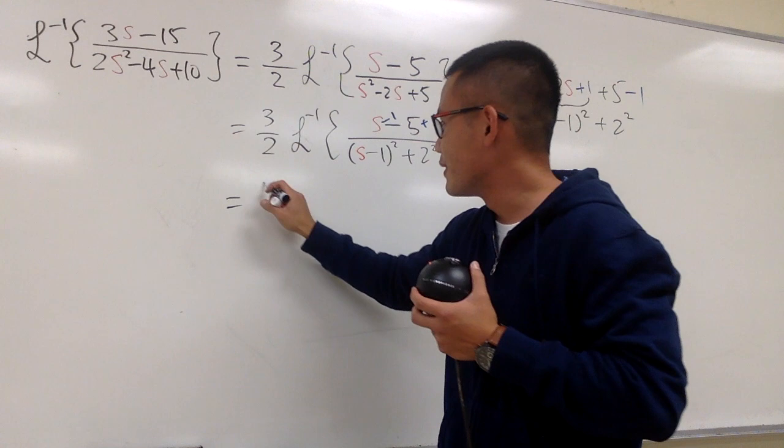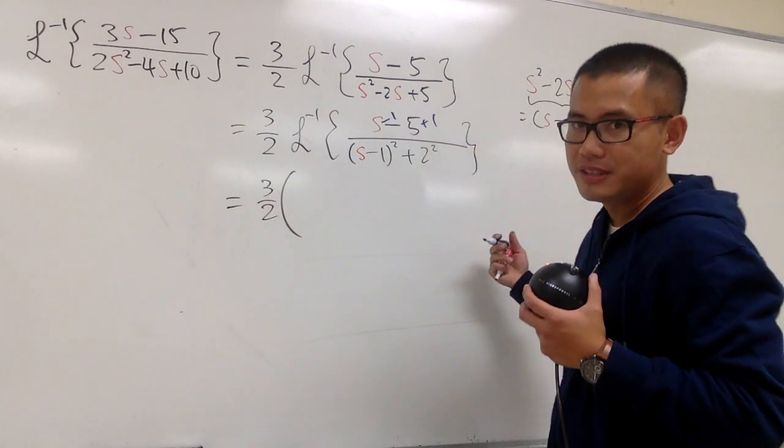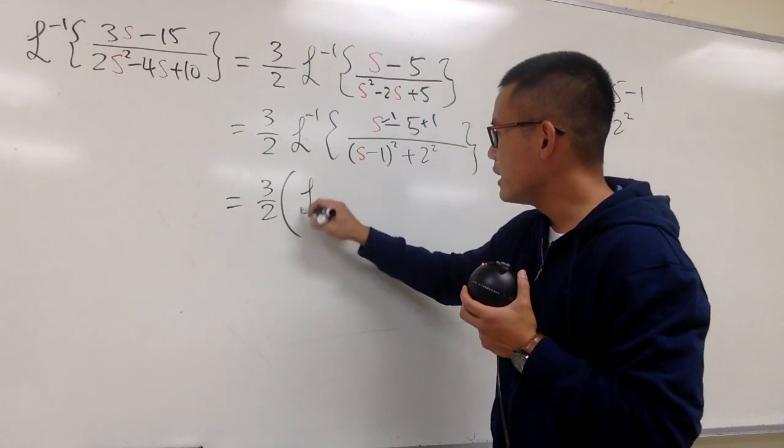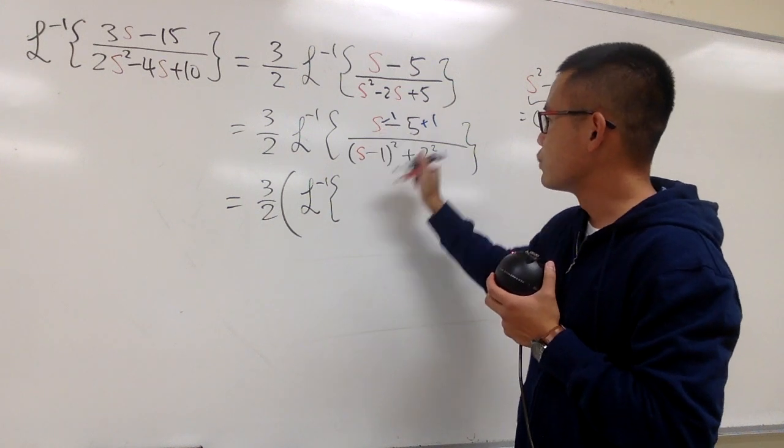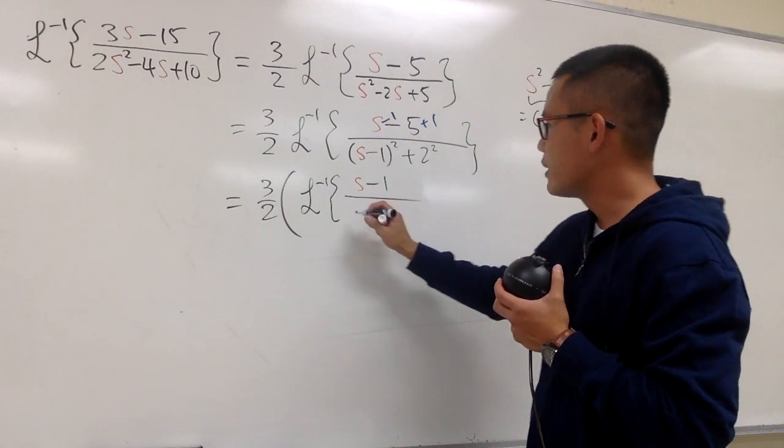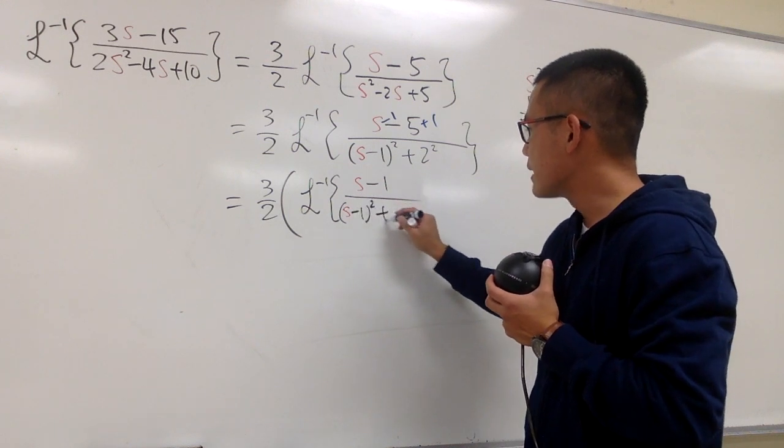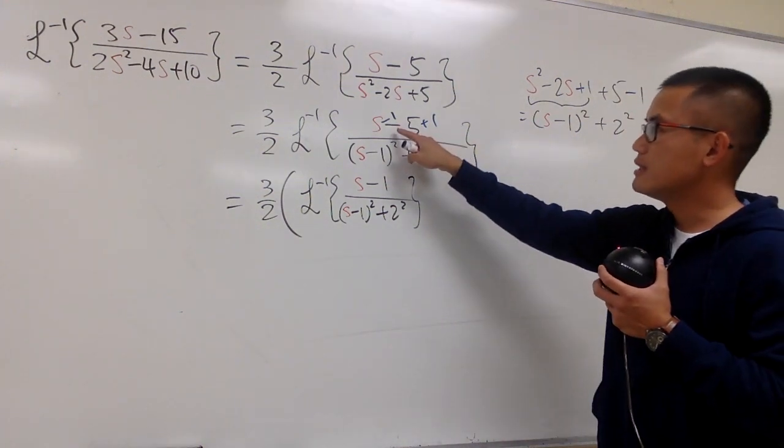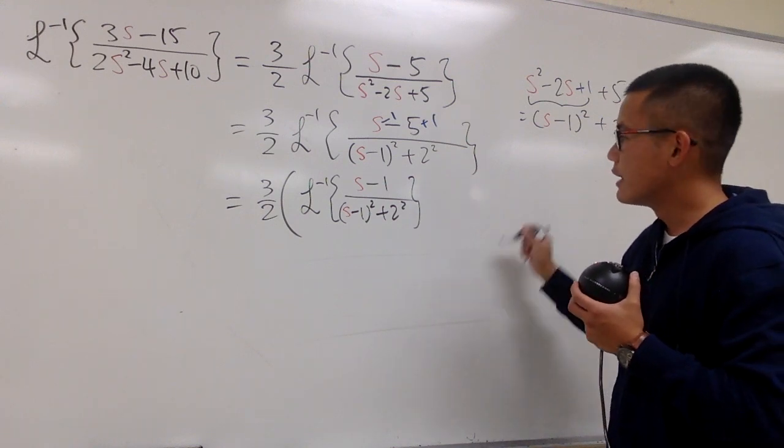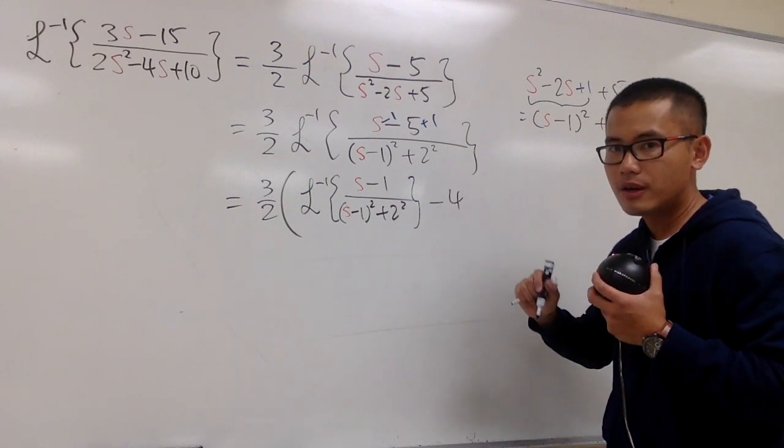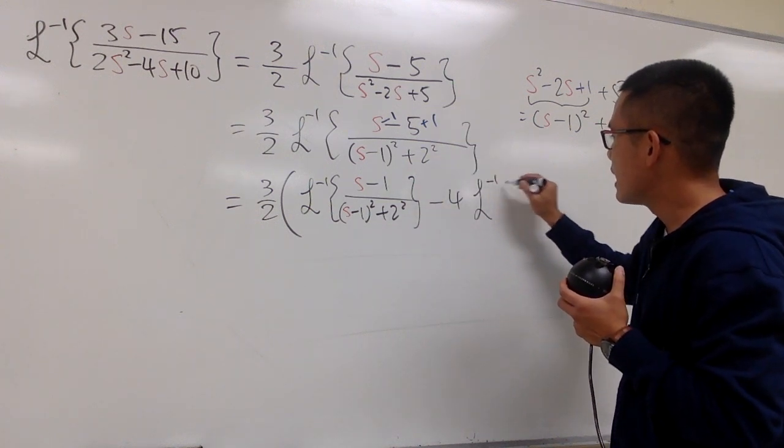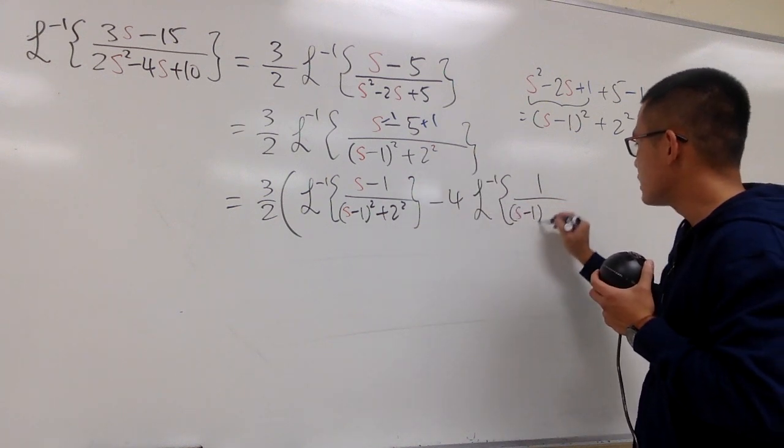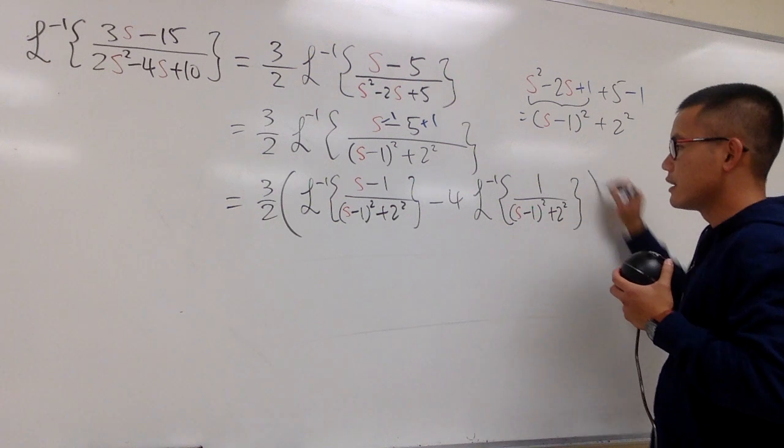So let's do this again. 3 over 2, and now let's put down a big parenthesis, because I'm about to break this into two different inverse Laplace. The first one is going to be the inverse Laplace, and we will have s minus 1 on the top, and then s minus 1 squared plus 2 squared on the bottom. And then the next one, this is minus 5 plus 1, which is minus 4. Let's factor that out. We have the minus 4, and then the inverse Laplace. On the top, I will just have a 1 now, and then over s minus 1 squared plus 2 squared, and then close the big parenthesis.